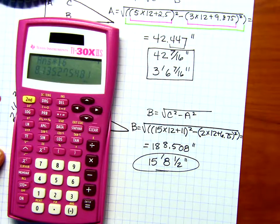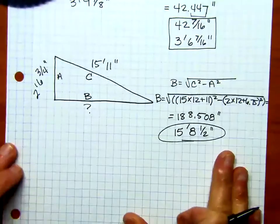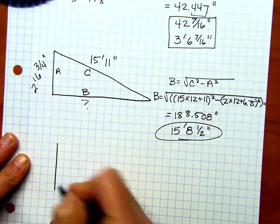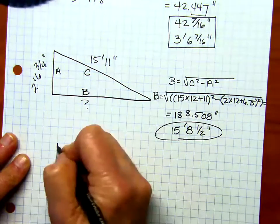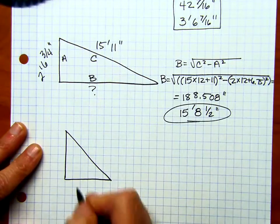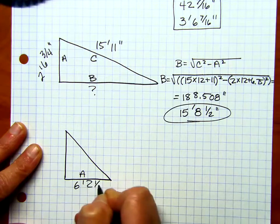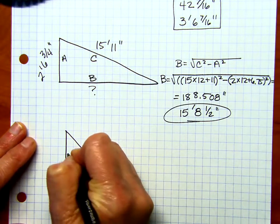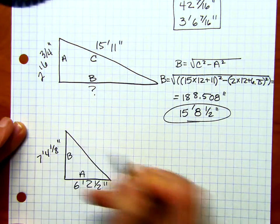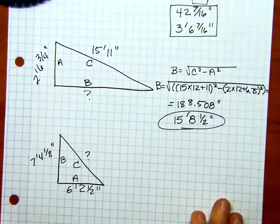Okay. We're moving on. We're going to do one more where we solve for the C side. All right. Let's say that the A side is going to be 6 feet 2 and 1 half inches, and the B side will be 7 feet 4 and 1 eighth inch, and the C side is our unknown.